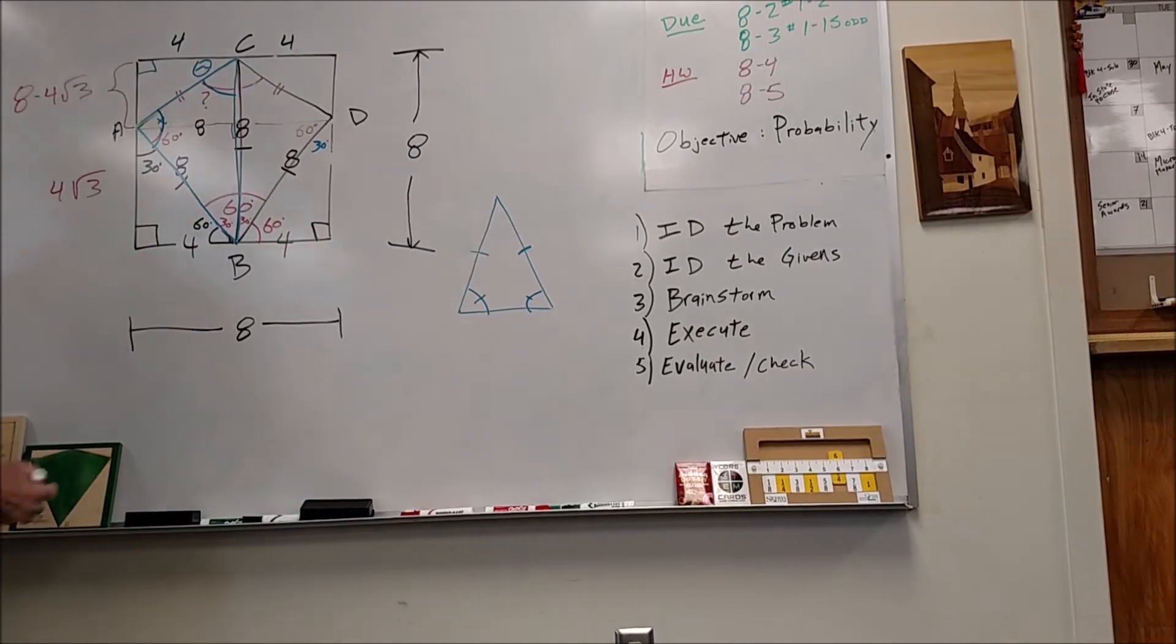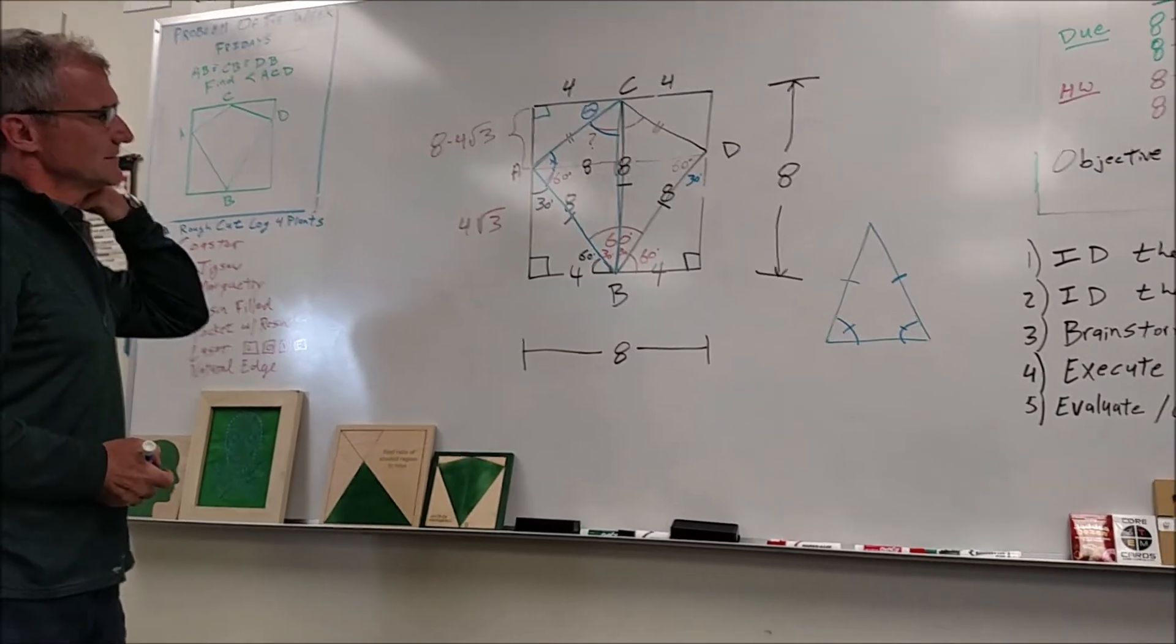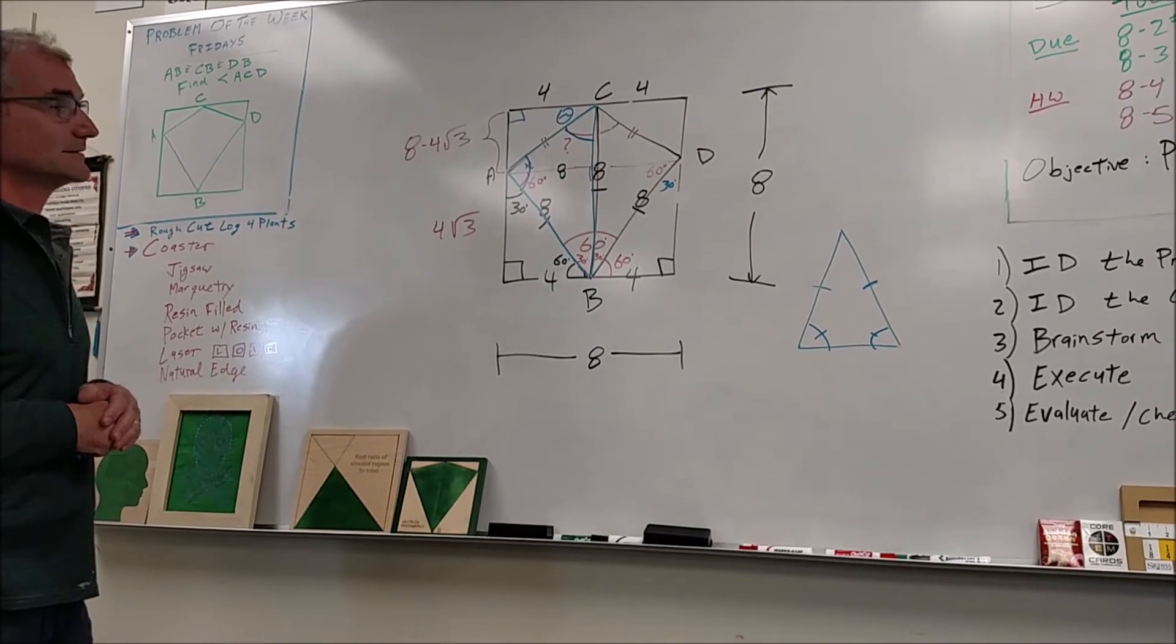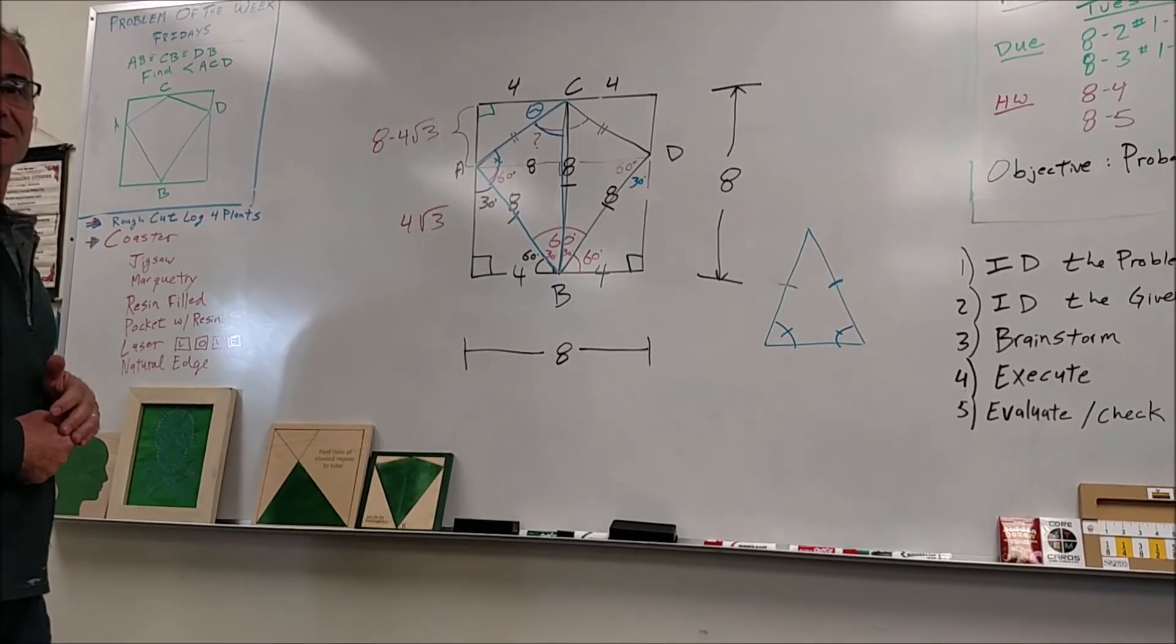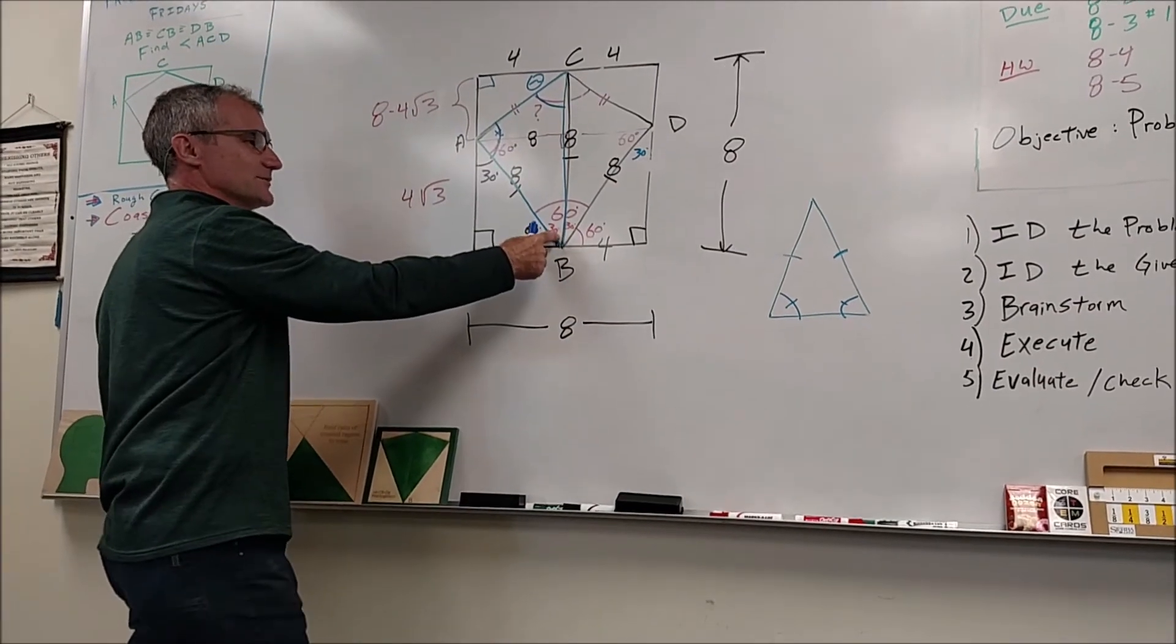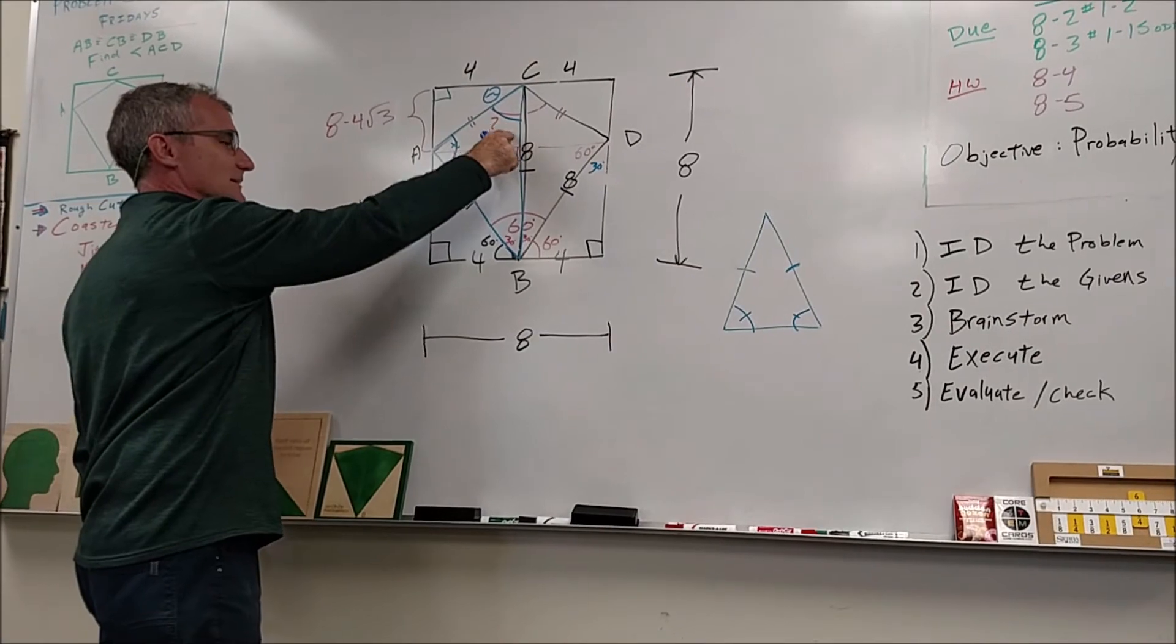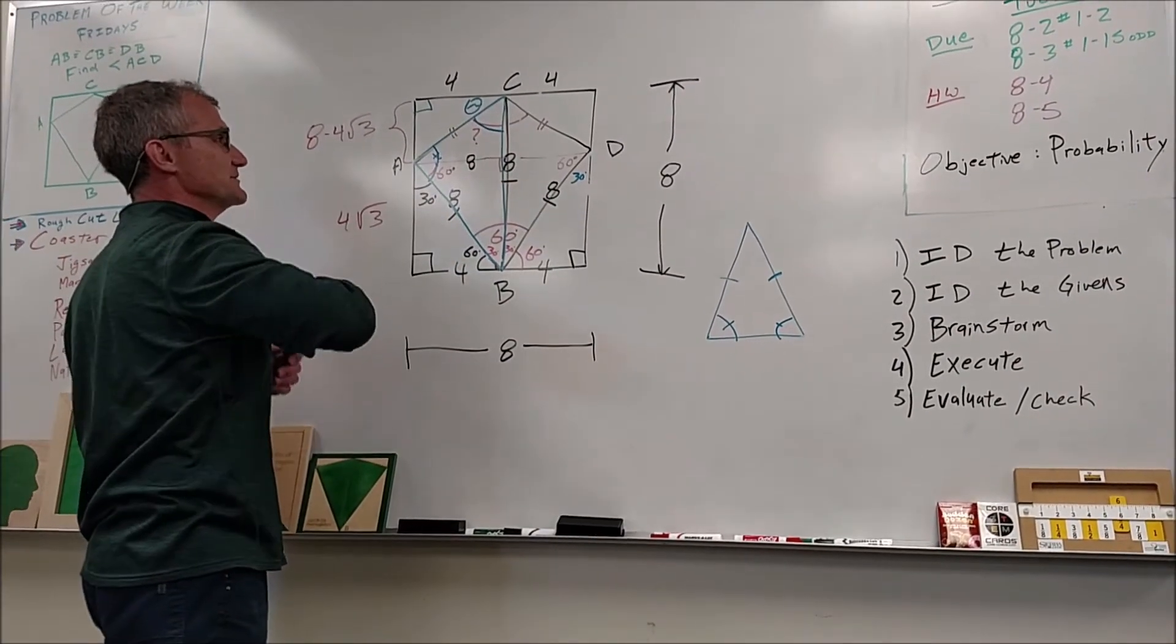They're congruent. They're congruent, and what do they have to add up to? They have to, well all three of them have to, oh wait. They have to add up to one fifty. Everybody see that? All three angles in the triangle add up to one eighty, the vertex is thirty, these two are congruent, and they're the supplement of thirty. So these two together are one fifty, so each one's seventy-five. So this is seventy-five degrees, and this one's seventy-five degrees, and this one's seventy-five degrees.